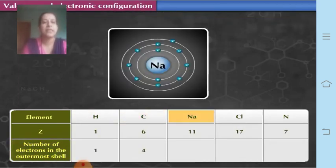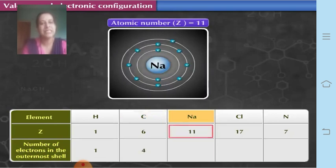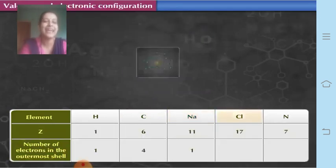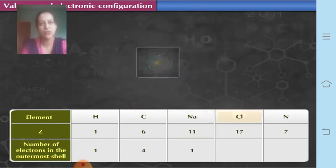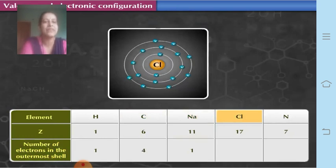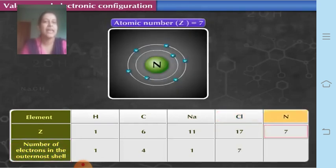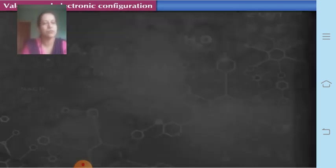For sodium with atomic number 11: the K shell has 2, the L shell has 8 (total 10), and the remaining 1 electron goes to the outermost shell. So sodium has 1 electron in the outermost shell. For chlorine with atomic number 17: its configuration is 2, 8, 7 — so 7 electrons in the outermost shell. Nitrogen has atomic number 7, so it has 5 electrons in the outermost shell.